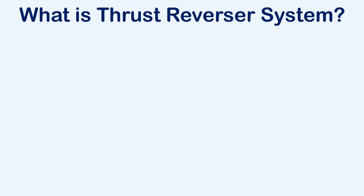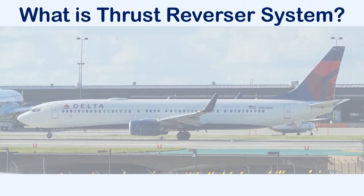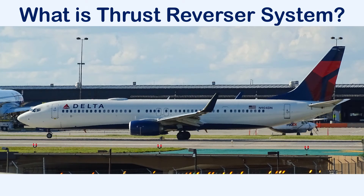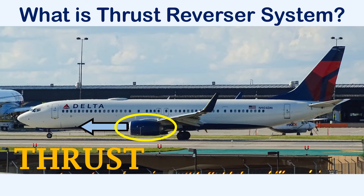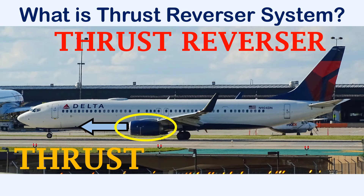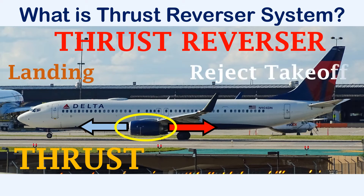First, let's see what is meant by a thrust reverser system. The thrust reverser is one of the systems that is installed on the engines. Normally, on an aircraft, the force that is acting in the forward direction is called the thrust force. The thrust reverser is used to create a backward force on the aircraft. This is mainly used during landing or in case of a reject takeoff, where the thrust reversers are used along with the brakes and the spoilers in order to stop the aircraft on the runway.